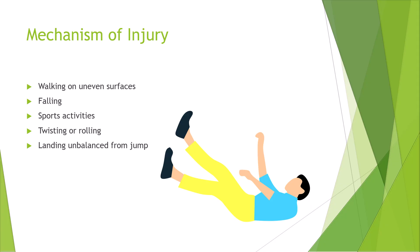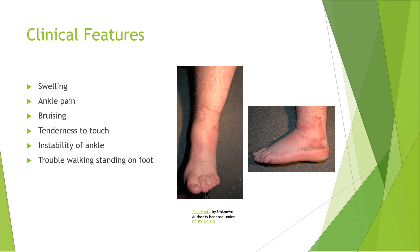What is the mechanism of injury? There are a few different mechanisms of injury, or the etiology — what causes it. Walking or exercising on an uneven surface, falling, sports activities that require cutting actions or rolling and twisting of the foot, twisting or rolling to the side, and landing unbalanced from a jump.